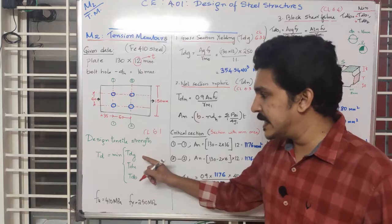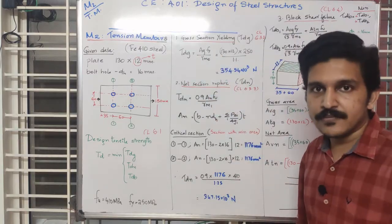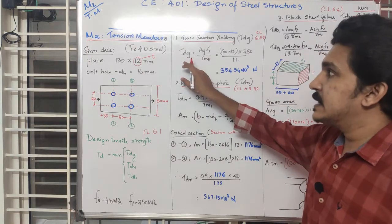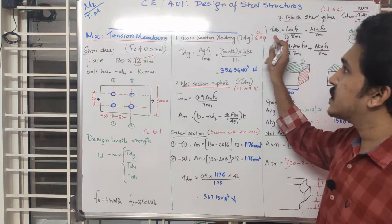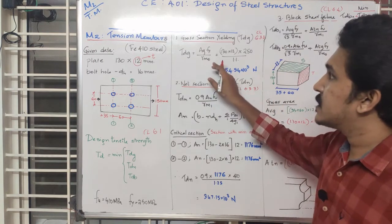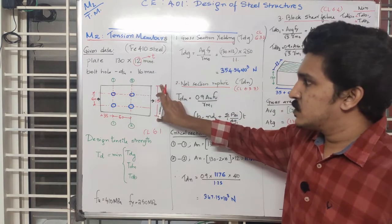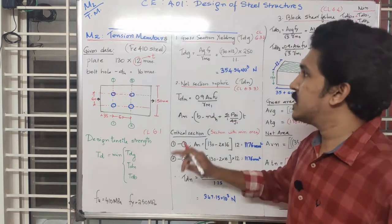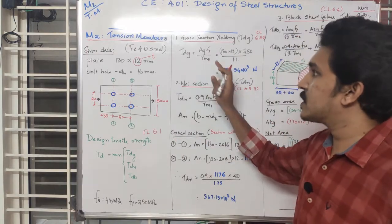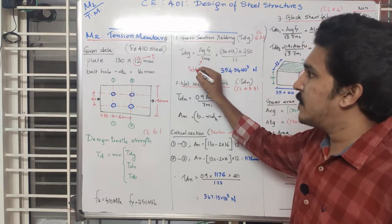The first step is TDG, which is gross section yielding. The full plate will yield. The equation is from clause 6.3.2. The gross area AG equals 130 by 12. The value of FY is 250 MPa and gamma M0 is 1.1 from table 5.